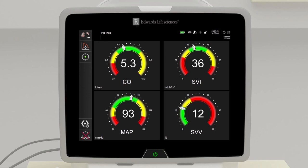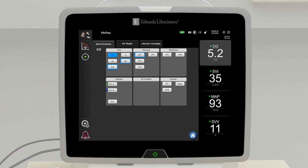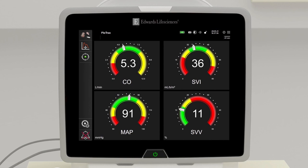To change a displayed parameter, touch outside the globe you want to change. The selected parameter appears highlighted. The other parameters being displayed are outlined. Available parameters appear without highlights. Touch the parameter you want to replace the current parameter.